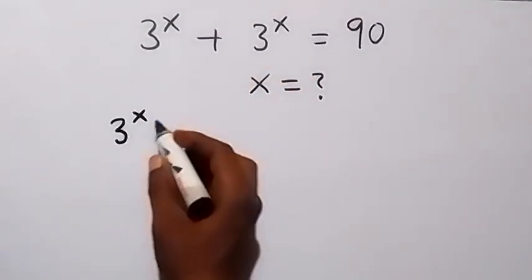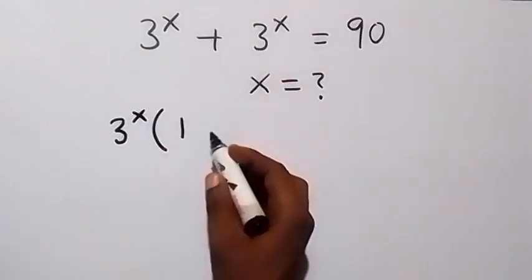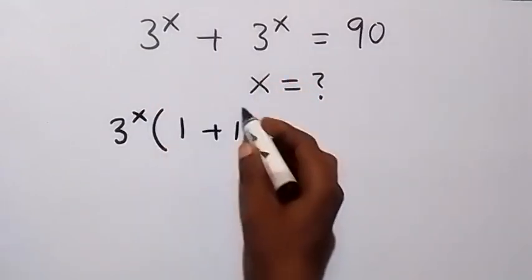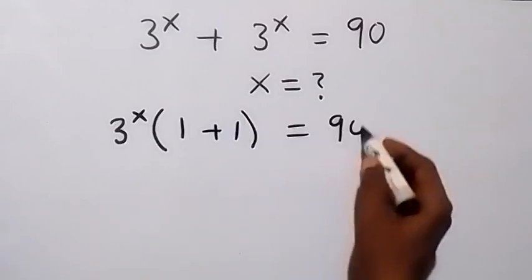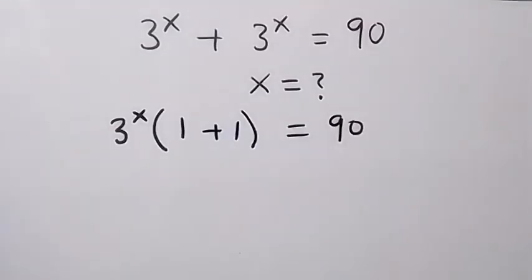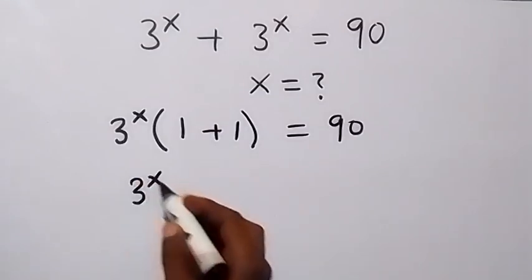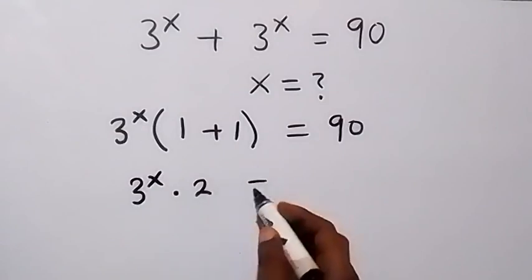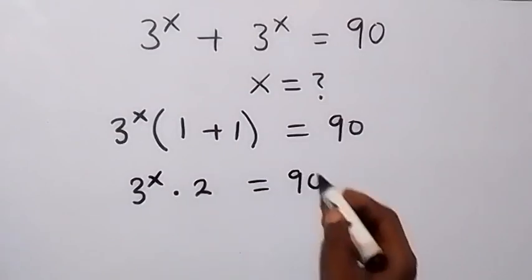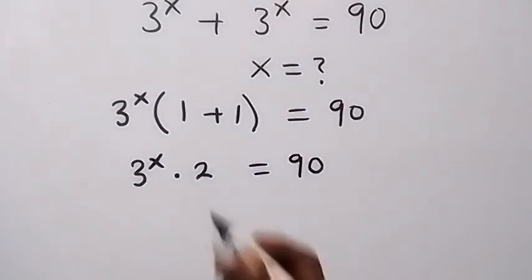We have 3 raised to the power x into bracket, leaving 1 plus 1 inside, which equals 90. Then 1 plus 1 is 2, so we have 3 raised to the power x times 2 equals 90. Now we divide both sides by 2.